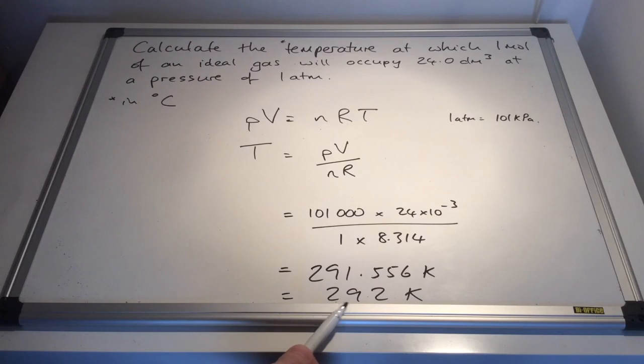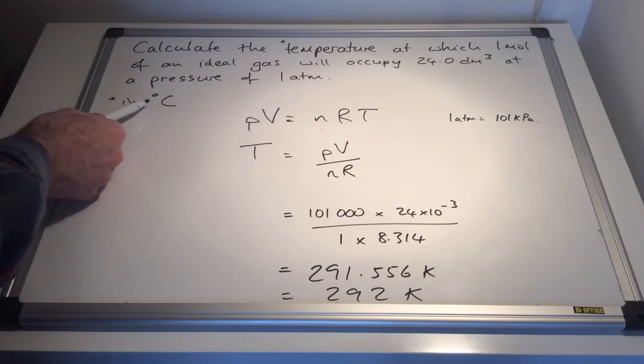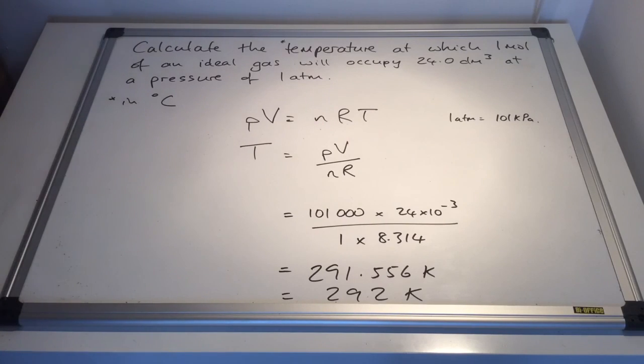But we wanted it in degrees Celsius. So how do we do that? Well, we're going to take off 273 and that's going to give us a temperature of 19 degrees C.